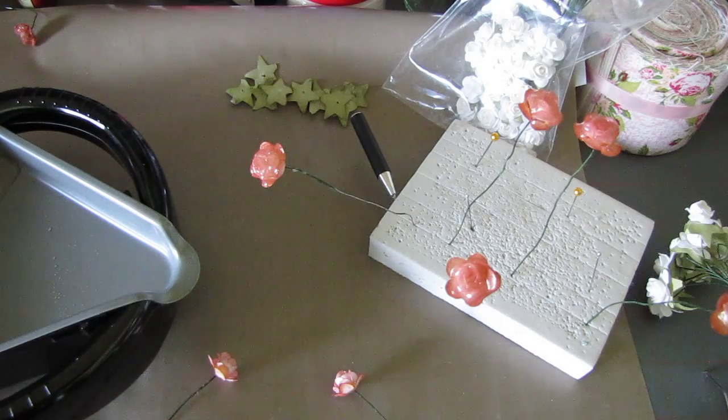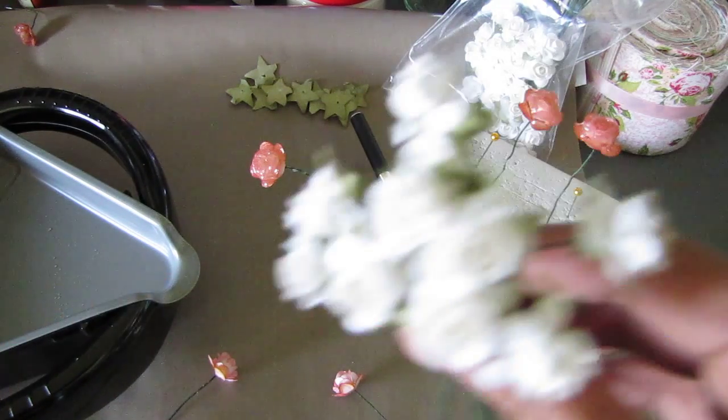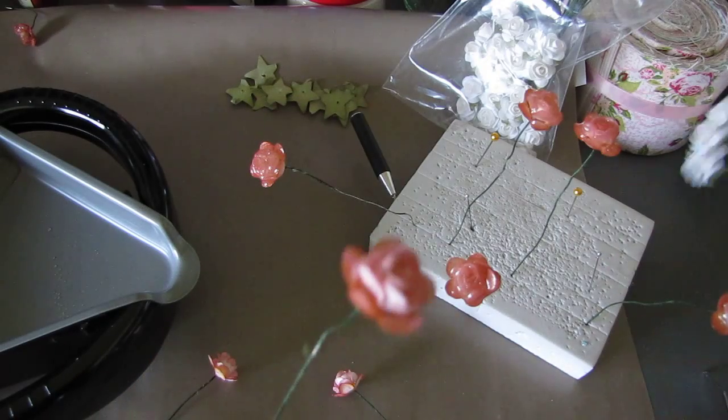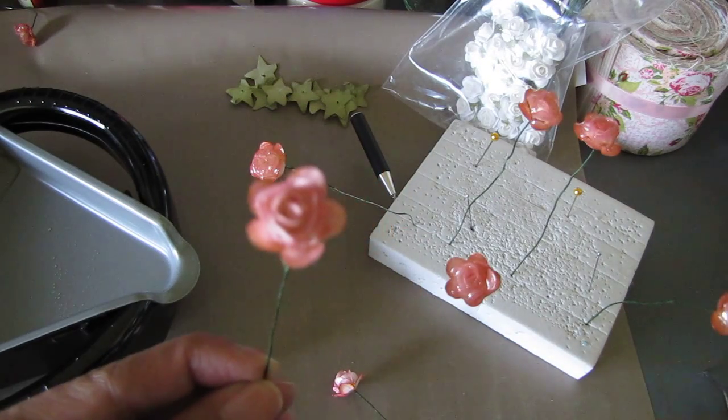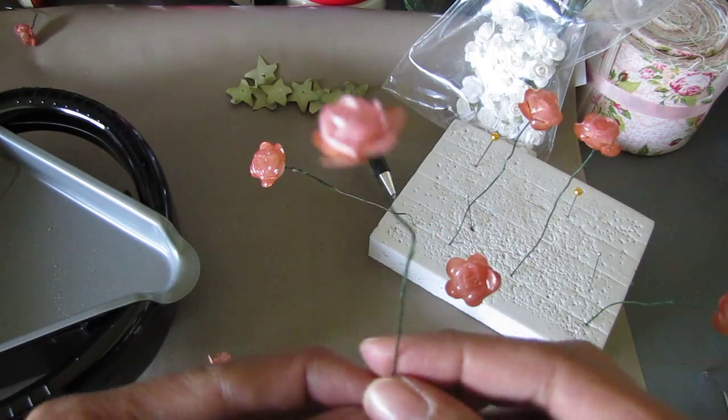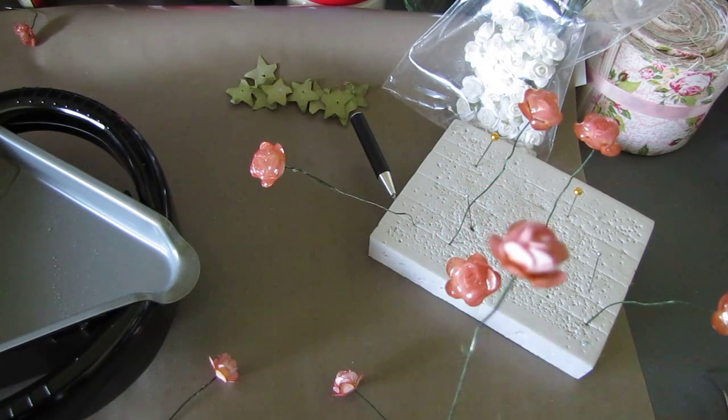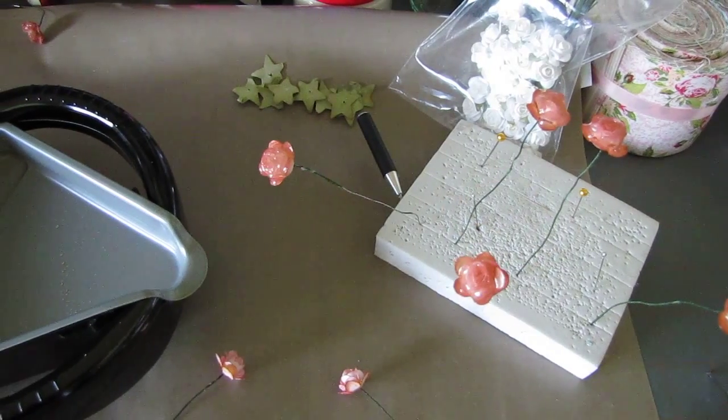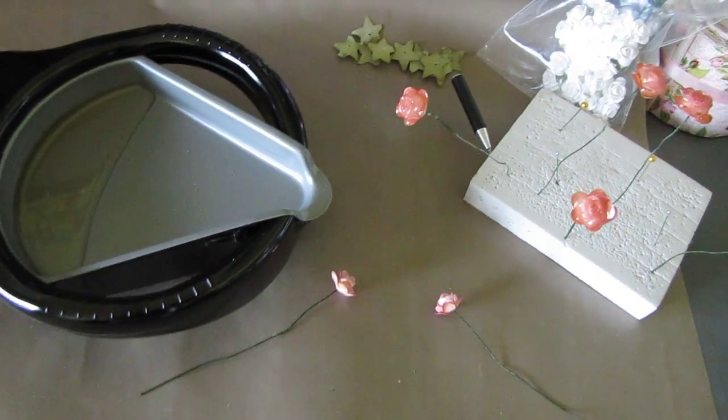So what I did - I got my regular white roses and I glimmer misted it. This is cherub pink. I heat dried the rose. I've seen Natalie do this with her ultra thick embossing powder, and that's what that melting pot is for. It's so much easier.